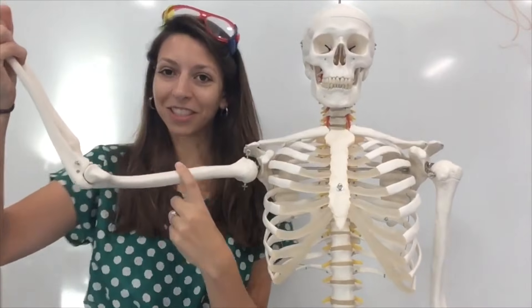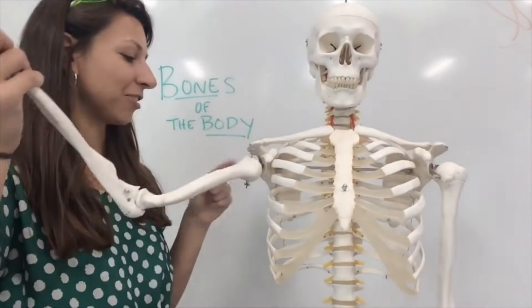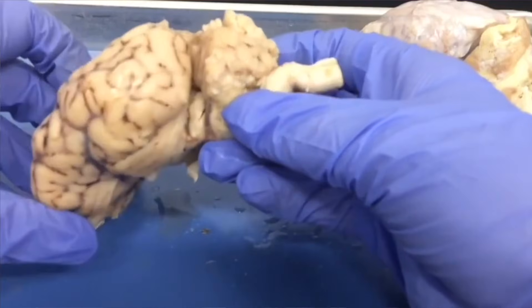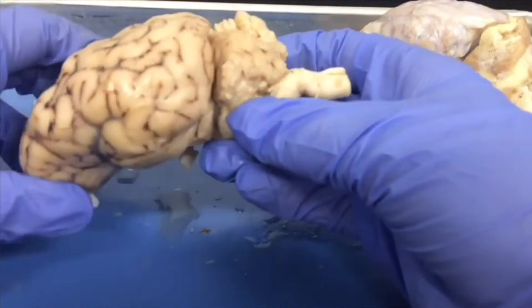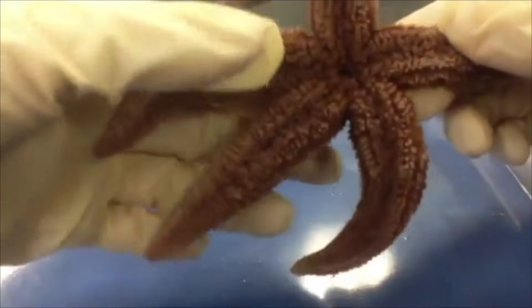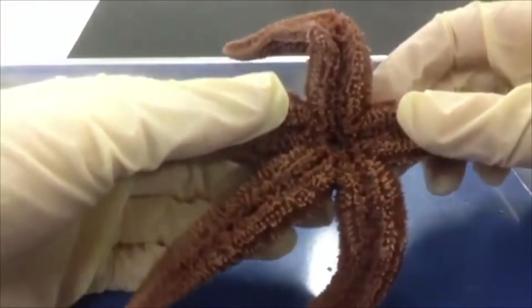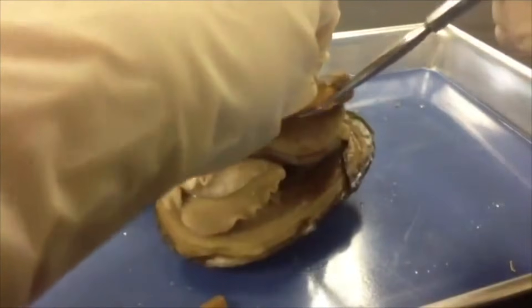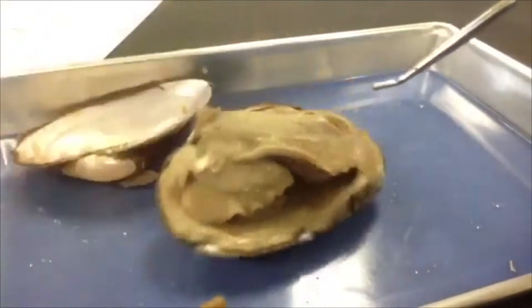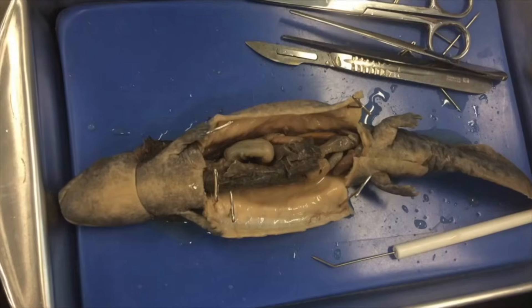Topics will often include body organization, homeostasis, histology, and then a tour of the different body systems like the skeletal system, the muscular system, cardiovascular, digestive, excretory, immune, nervous system, and special senses. Throughout the course you should develop an understanding of anatomy and physiology and how they're connected, and you'll probably get an opportunity to do a lot of laboratory work, especially dissections.